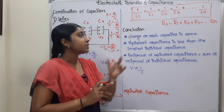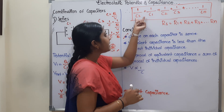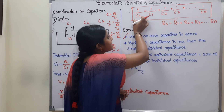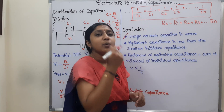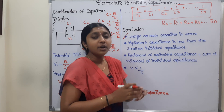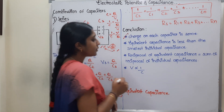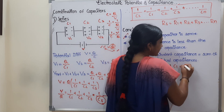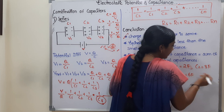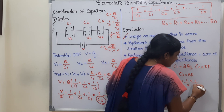Let's note the key conclusions for capacitors in series. First point: the charge is the same across all capacitors. The equivalent capacitance Cs is less than each individual capacitor. The formula is: 1/Cs = 1/C1 + 1/C2 + 1/C3. Let's verify with an example: C1 = 2F, C2 = 3F, C3 = 6F. Then 1/Cs = 1/2 + 1/3 + 1/6.